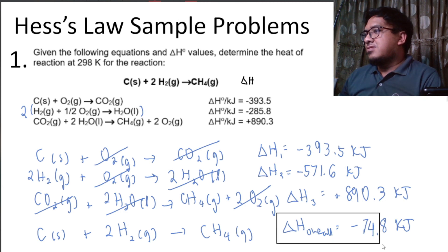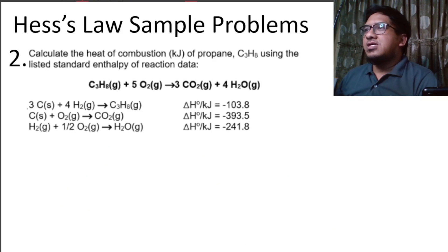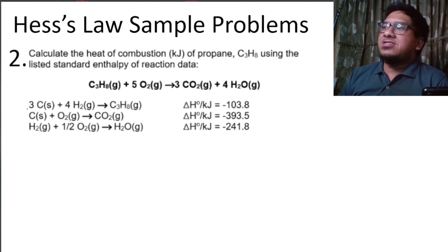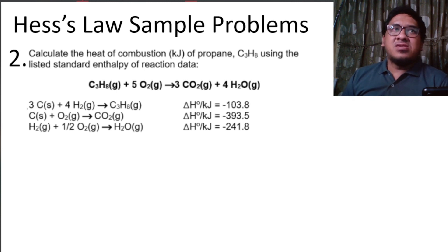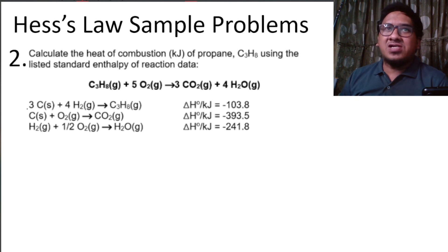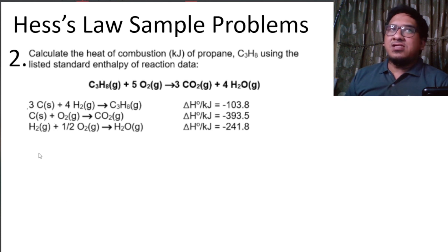For the second problem: calculate the heat of combustion in kilojoules for propane, C₃H₈. The overall reaction is: propane reacts with five moles of oxygen to yield three moles of carbon dioxide and four moles of water vapor. We are given listed standard enthalpy of reaction data for three step reactions. First, we inspect the coefficients and placement of substances in the overall reaction versus the listed step reactions.